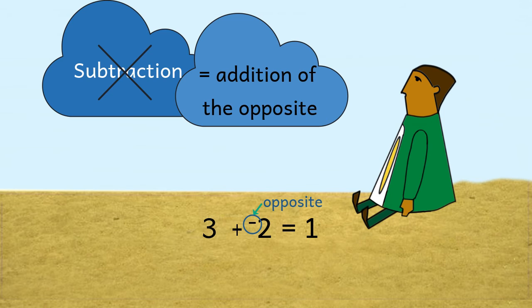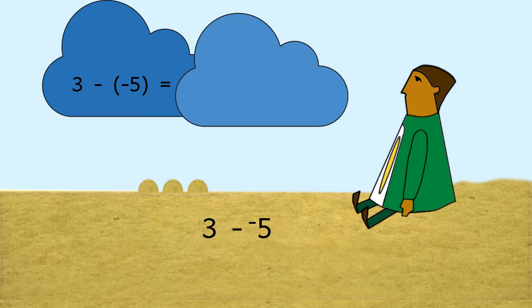Knowing this can make problems that seem hard much easier. What is three minus negative five? We can think of this as three piles plus the opposite of five holes. Well, the opposite of a hole is a pile. So the problem is really three piles plus five piles, which is eight piles.